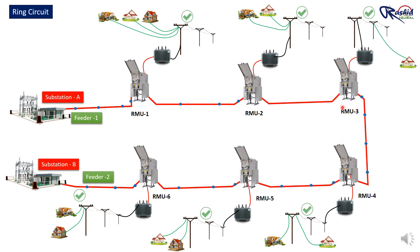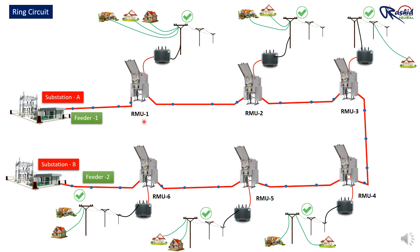Meanwhile, technicians can use a tag-in tag-out procedure to begin fixing the fault. This setup means all loads continue to receive power even though there is a fault between RMU2 and RMU3. The ring system allows power to take an alternate path, avoiding the damaged section. While power is still being supplied to all loads, technicians can safely repair the fault on Feeder 1 between RMU2 and RMU3 without disrupting the rest of the network. Once the repair is complete, normal power flow from Feeder 1 can be restored and the switches reset to close the loop. This is the main advantage of the RMU.